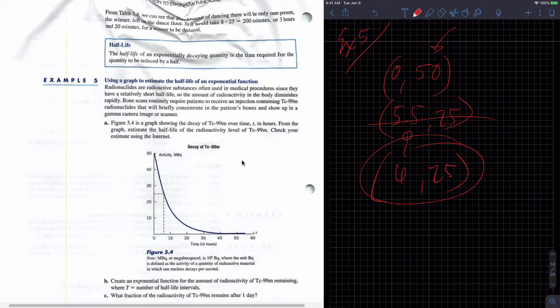I'm sorry, that was part B. Oh, that was part A. Part B is create an exponential function for the amount of radioactivity of TC99M remaining where T equals number of half-life intervals. So then part B, that was A. Part B is, for now, the complexity is going to be very simple. We're talking about half-life. So my decay factor is one-half.